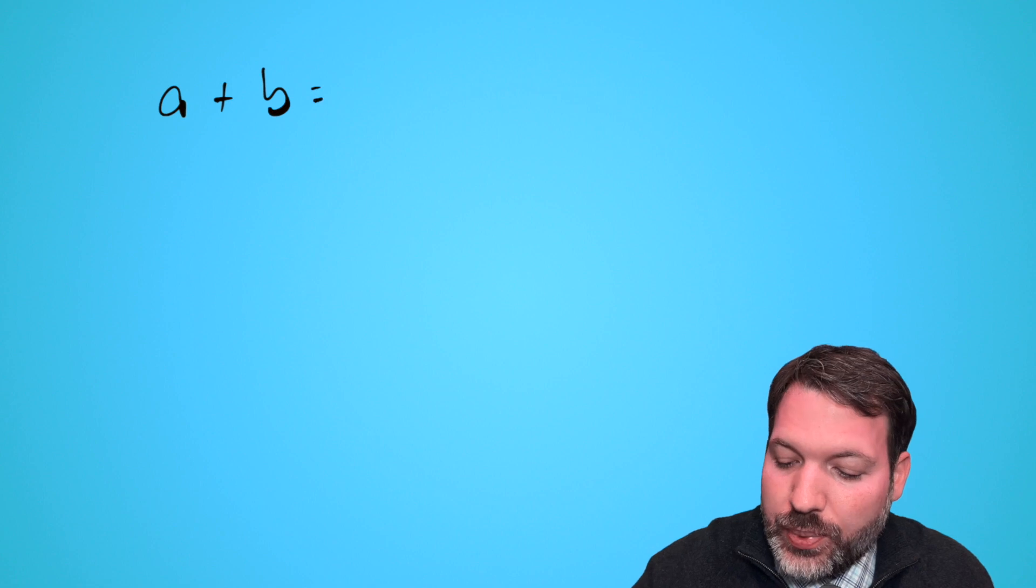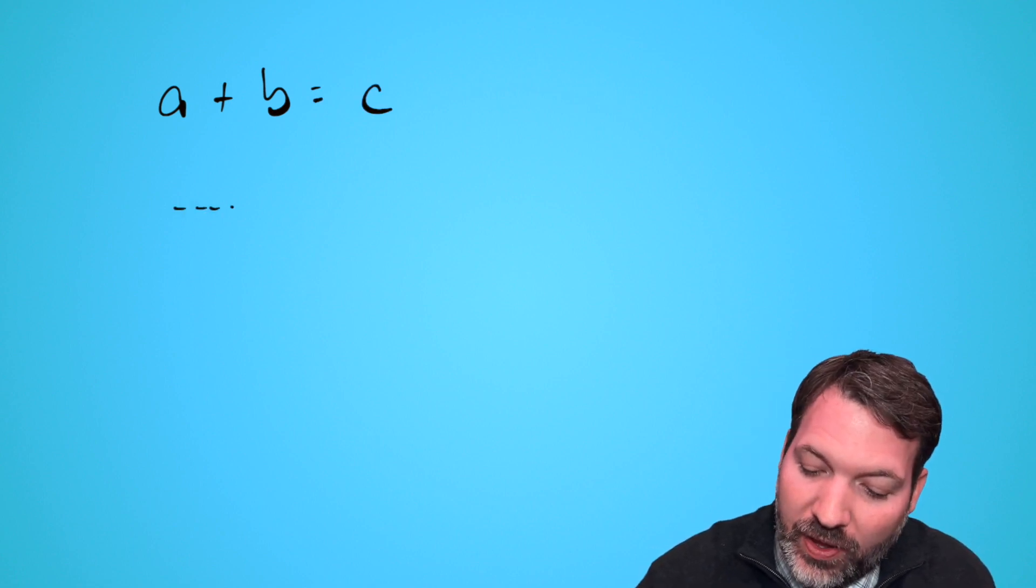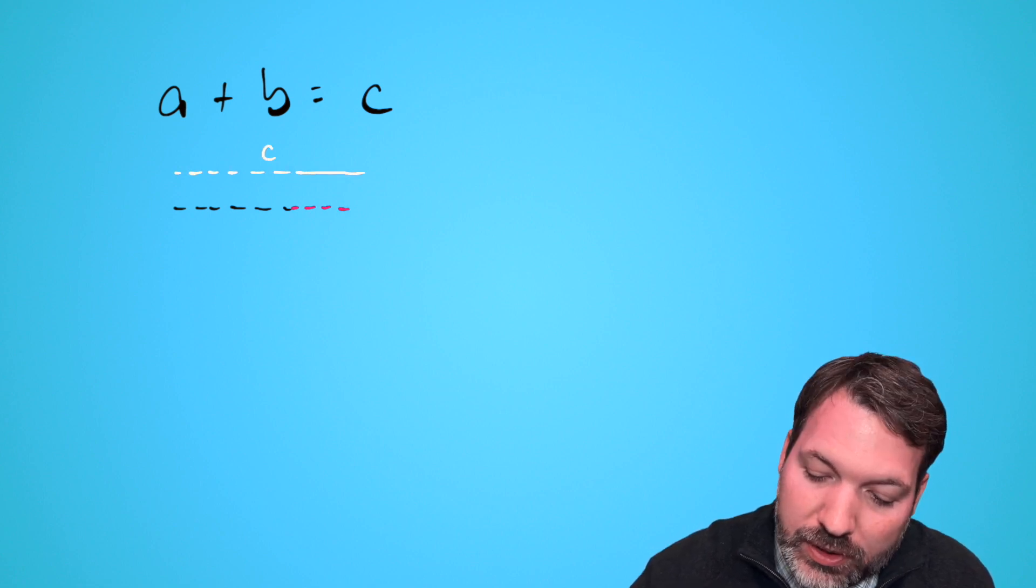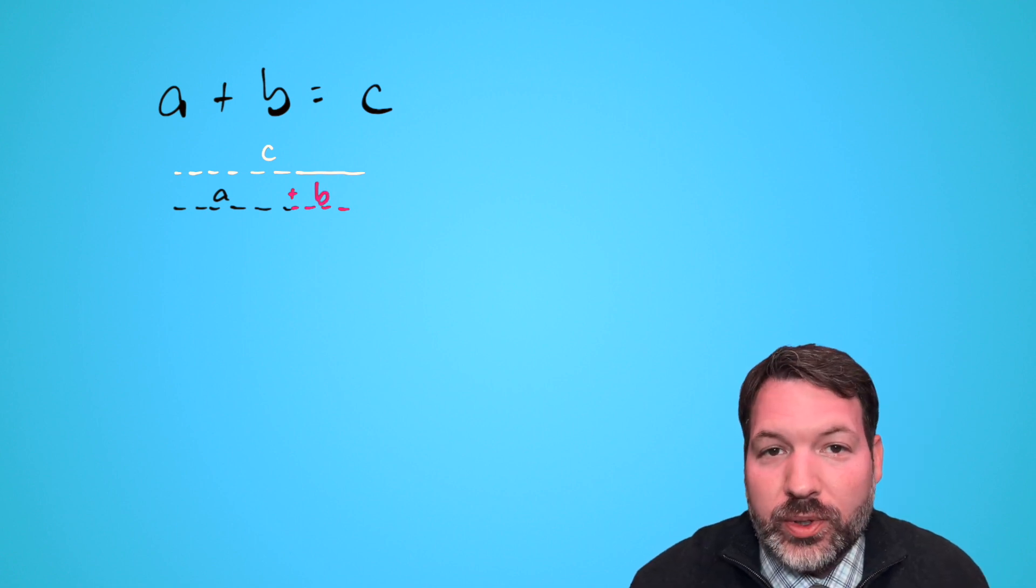One way to figure out what's going wrong here is to think about this geometrically. If we know that a + b = c, you could think of these as lengths. A length of a and a length of b that happens to make a total length of c. So this part is the a, this is the plus b, and you can see that they match up with c.